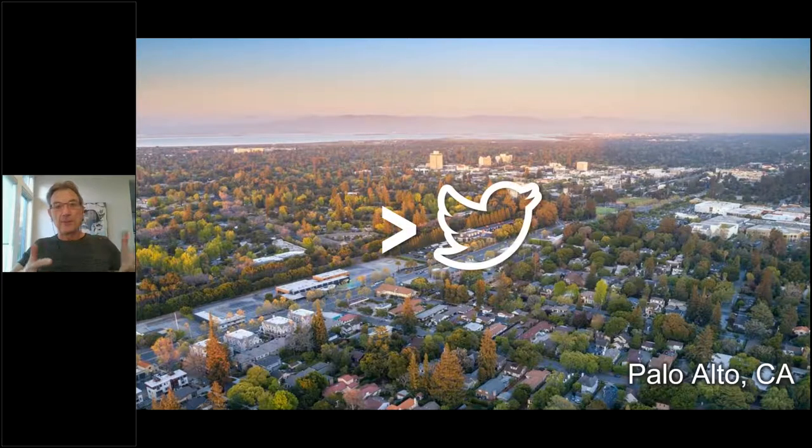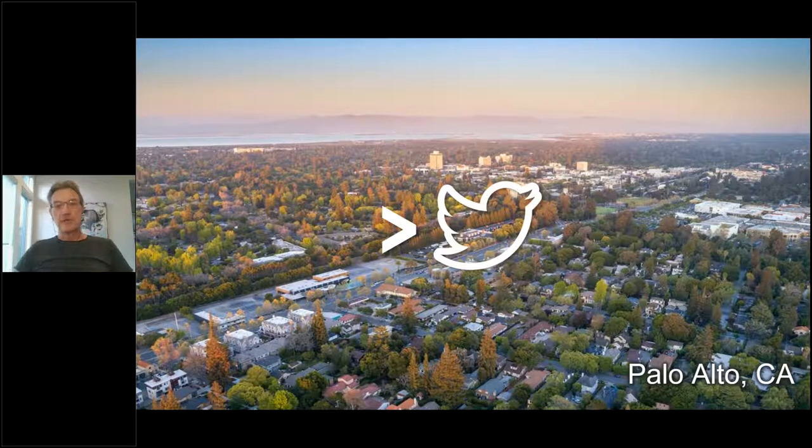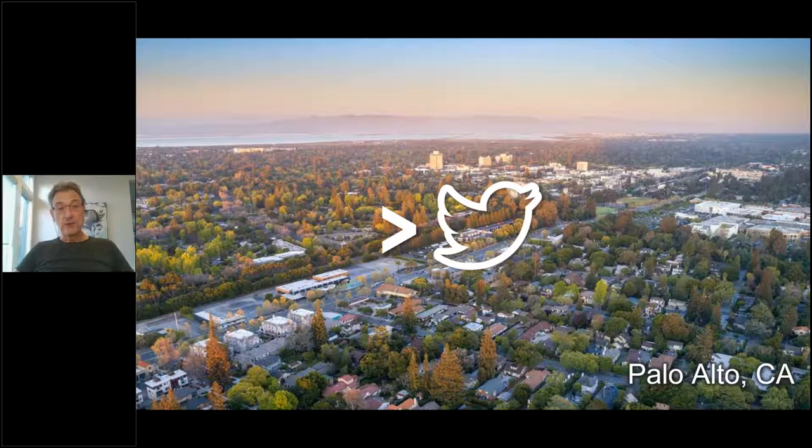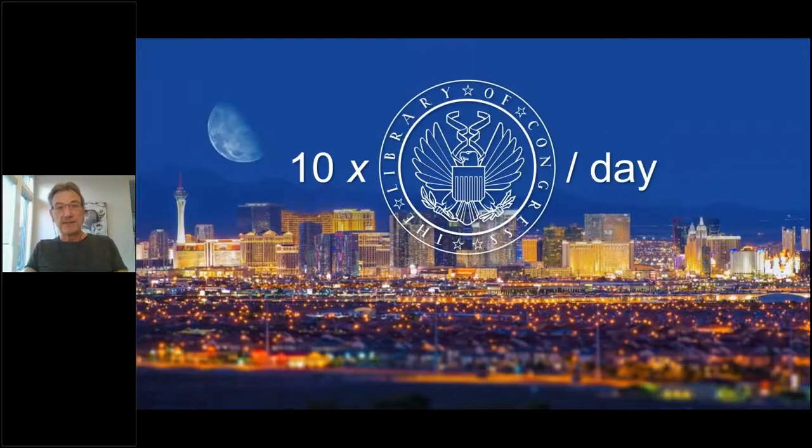Just for example, the small town of Palo Alto, California, the traffic lights in downtown Palo Alto deliver more data per day than all of Twitter. And if I take you to Las Vegas, that's 10 times the Library of Congress per day just from the traffic lights. So we have a problem. All these promises of smart cities and smarter environments are not going to be realized unless we manage to deal with this.